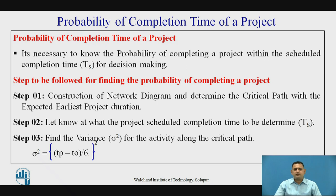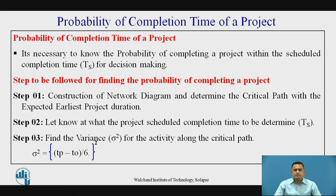Now let's see the probability completion time of the project. It is necessary to know the probability of completing the project within the scheduled completion time, denoted by ts, for decision making. The steps to be followed for finding the probability completion time of the project are: first, construct the network diagram and determine the critical path available for the particular project. Next, determine whether we need to find the scheduled completion time or the probability of completion of the project.